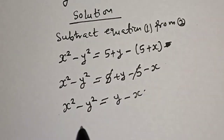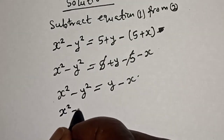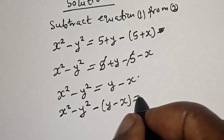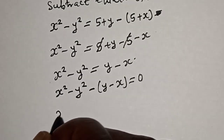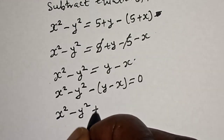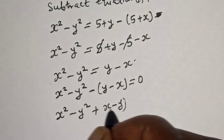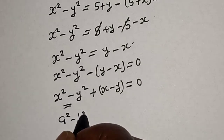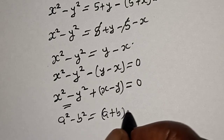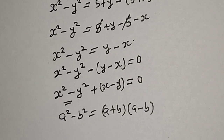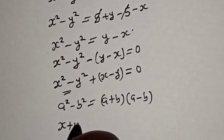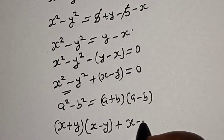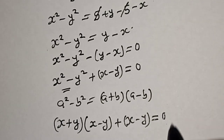Now let's bring this to this side. We have x square minus y square minus y minus x is equal to 0. This is x square minus y square plus x minus y is equal to 0. Now this is difference of two squares — that is a square minus b square is equal to a plus b multiplied by a minus b.